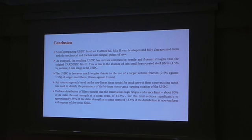The ultra-high performance concrete is rather ductile, and this is due to the use of a larger volume fraction, 2.5% against 1.5% of longer steel, 30mm long against 13mm long. An inverse procedure based on the original fictitious crack hinge model for fracture from a previous image was used to identify the parameters of the bilinear softening relation of ultra-high performance concrete.